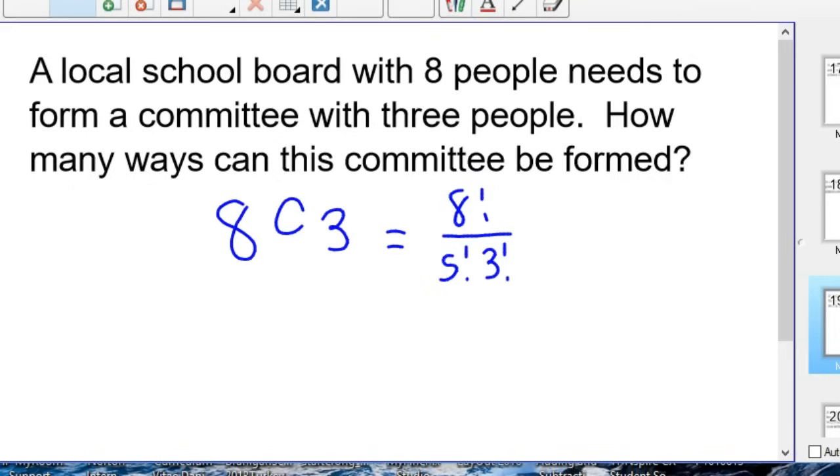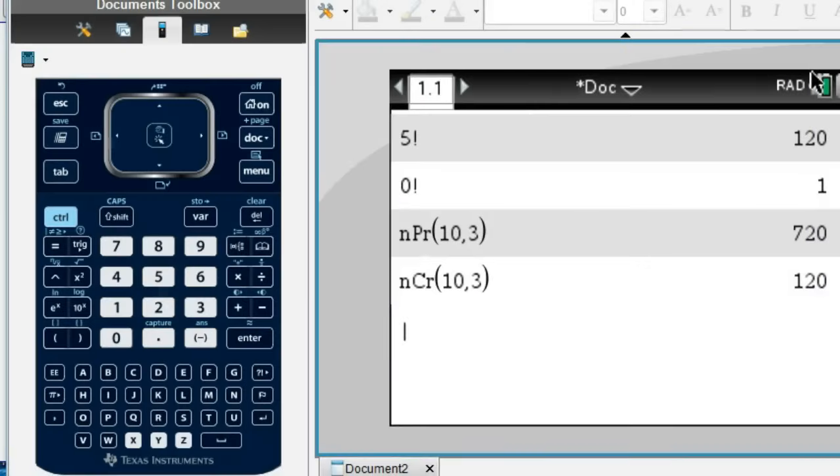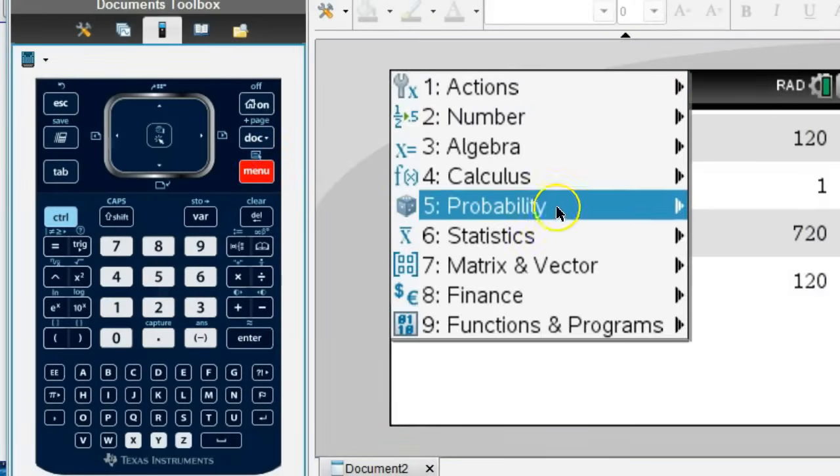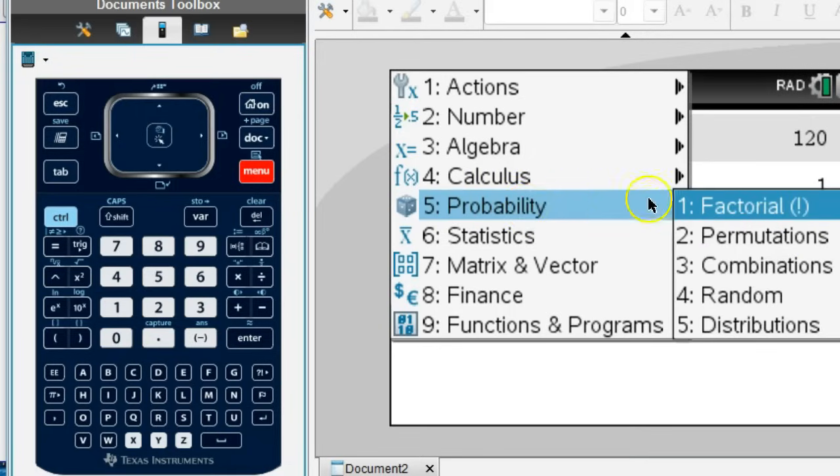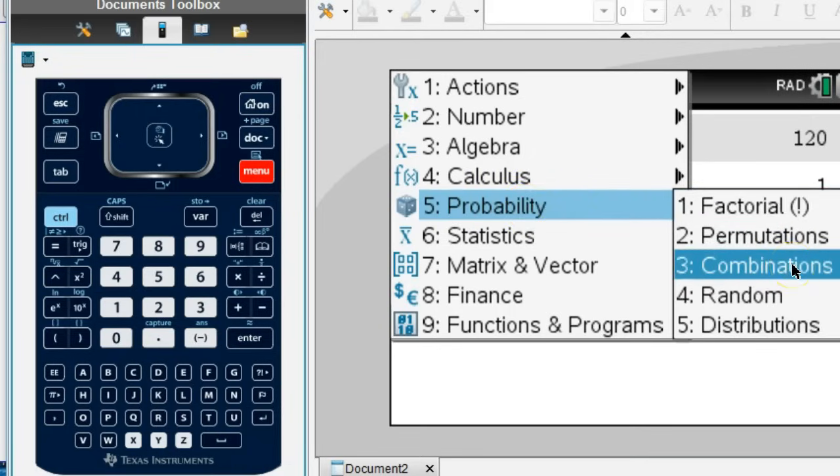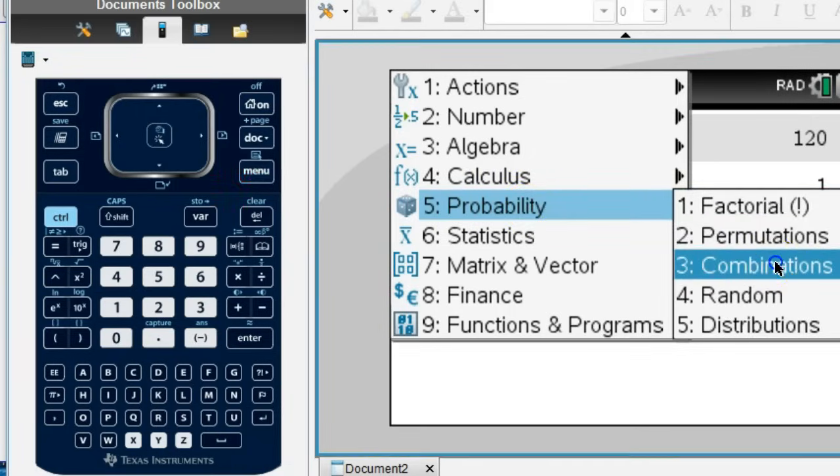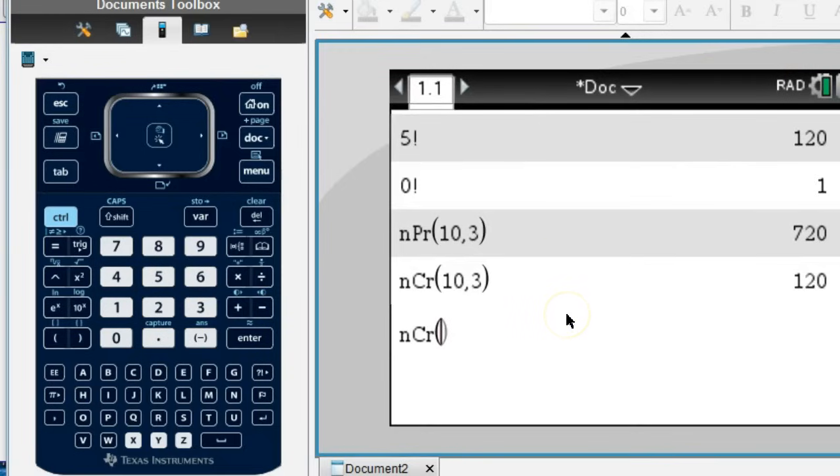So this time I'll get out the TI Inspire calculator just to show you how to plug them in. So you'd hit menu, probability. This is after hitting calculator, by the way. This is a combination. And it was 8 choose 3. So there's 8, 3. Hit enter. And that is 56.